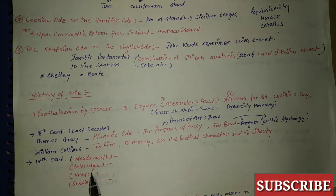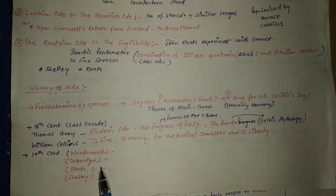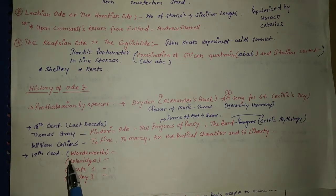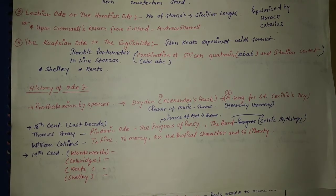In 19th century, William Wordsworth wrote some sonnets, Coleridge wrote some sonnets, and Keats and Shelley.